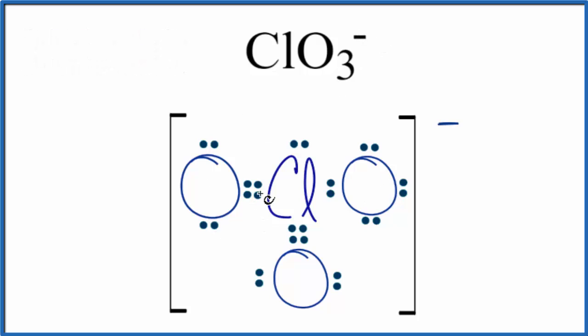The formal charges on each atom are zero, except for the single bonded oxygen. That'll have a negative one formal charge, and that makes sense because the ion is one minus. So those need to match.